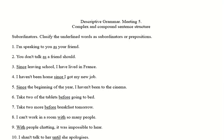The last one, number ten: 'I shan't talk to her until she apologizes.' We've got 'I shan't talk to her' and 'she apologizes' — these could be two separate things, so clearly they must be linked with a subordinator. This reminds me that I was supposed to say something about the verb 'shall.' Shan't is of course the negative form of shall. I will actually do that, but not right now as that's going to just confuse us.